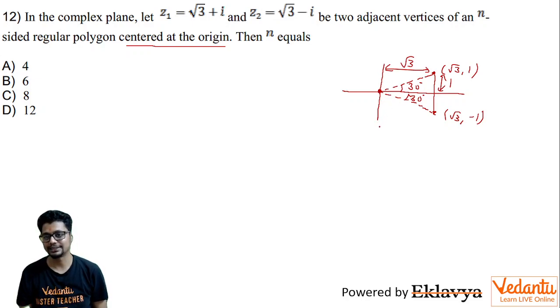360 degrees divided by 60 degrees. So here, you may say 360 degrees divided by 60 degrees equals 6 sides and N is equal to 6.